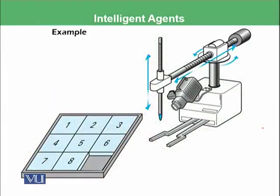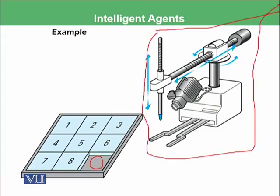Let's look at an example of an intelligent agent. We have a game with different cubes numbered 1 through 8, with one empty space. The agent sees this image and tries to arrange the tiles into the correct order — the perfect configuration where all squares are placed properly. It might move tile 6 downward, tile 5 here, tile 1 over here, and so on, disturbing the current order so the agent then tries to restore the perfect arrangement. How it does this will be discussed in upcoming modules.